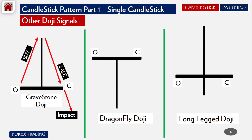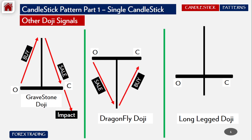For the Dragonfly Doji, the price opens and closes at the top. The sellers take the price down to the bottom of the lower wick, and then buyers bring it back to where it had opened — so it opens and closes at the same level. The impact of the Dragonfly Doji will be on the upper side.